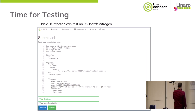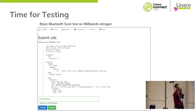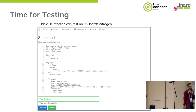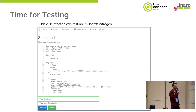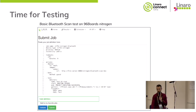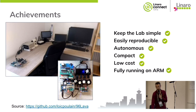Once all is ready, you can just submit tests via the LAVA web interface. Here is an example of a simple test: I retrieve a firmware file for the Nitrogen board which is a Bluetooth scan binary, then parse the output of the Zephyr console. The test passes or fails depending on whether the device is able to scan Bluetooth devices. This is a very basic test, but it's just an example.